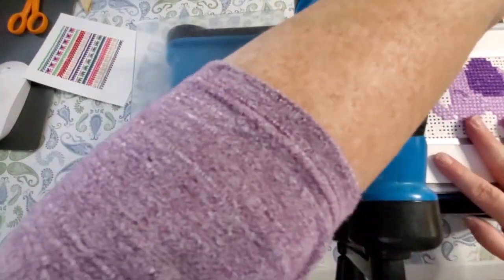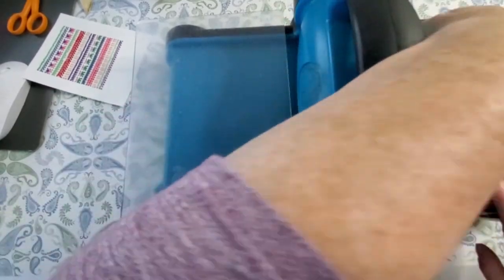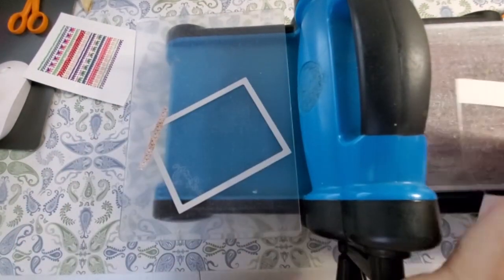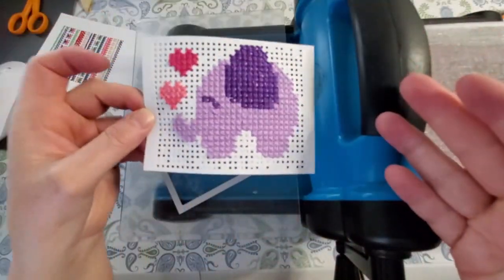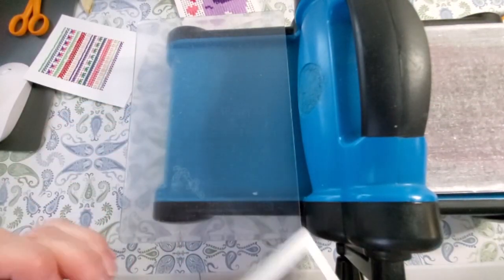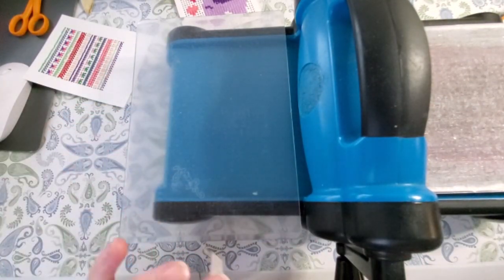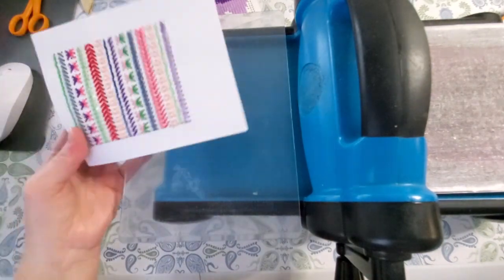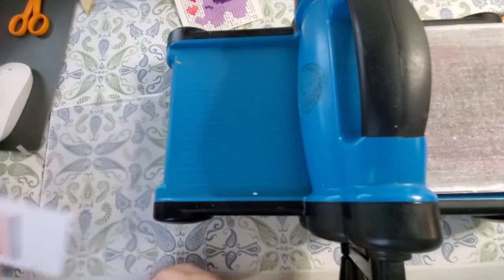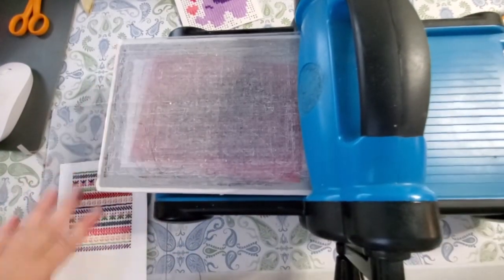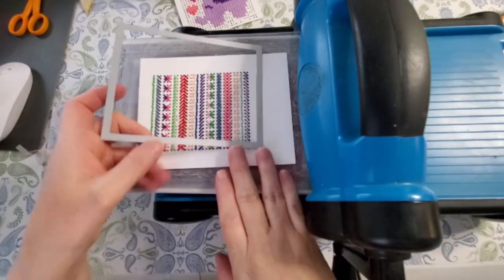When you do this, you cut it down quite a bit and it's really flimsy. I think this was only on 65 pound cardstock. I had done it on the 110, so it really weakens it quite a bit once you cut it out.